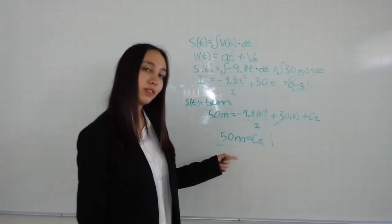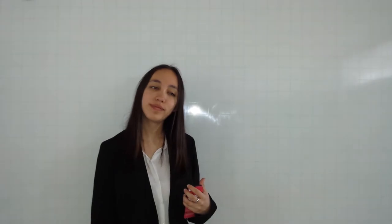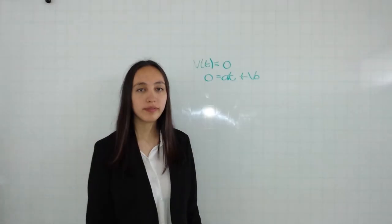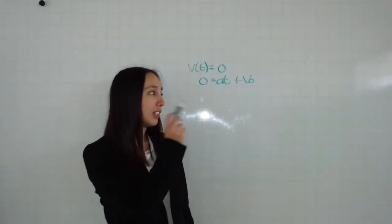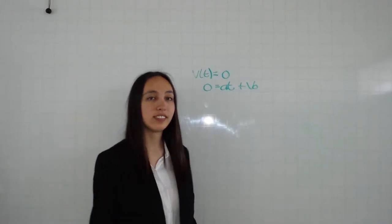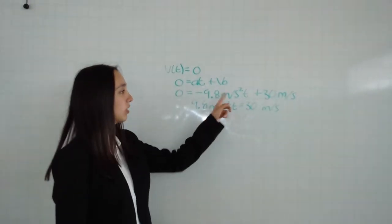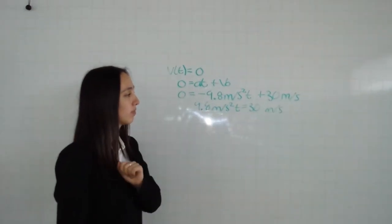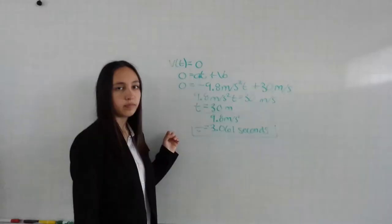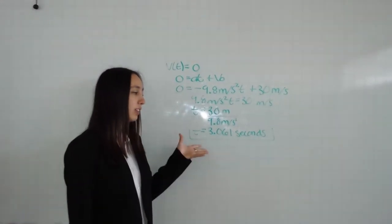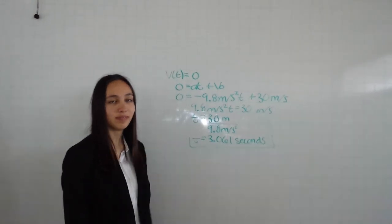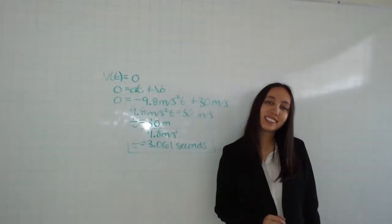We now calculate the time. We know that v of t is equal to zero at its highest point. And we equal the velocity function to zero, so zero equals minus 9.8 meters per second squared times t plus 30 meters per second. When we solve that, we get that time is equal to 3.061 seconds.